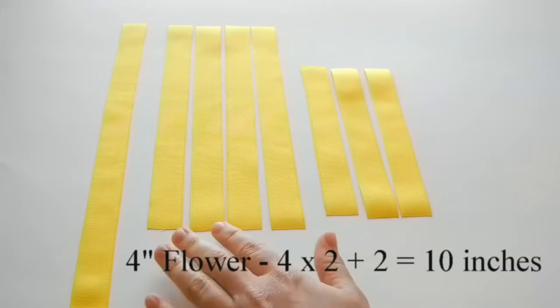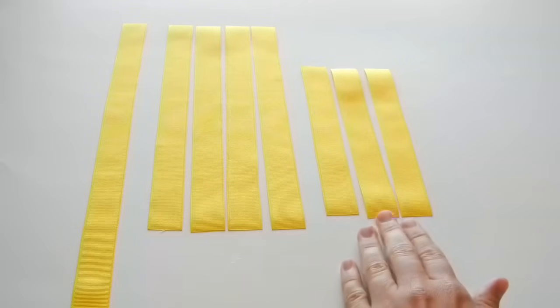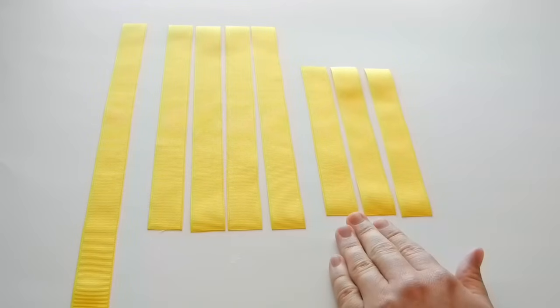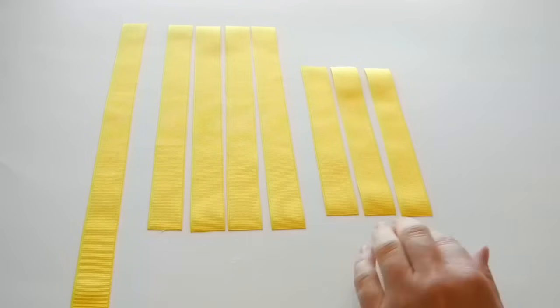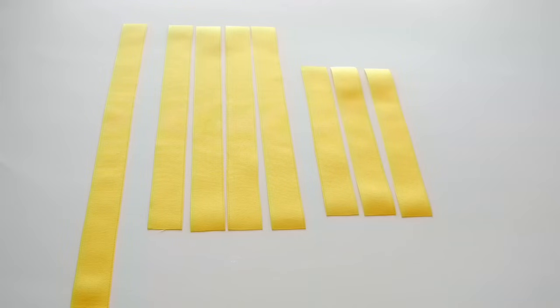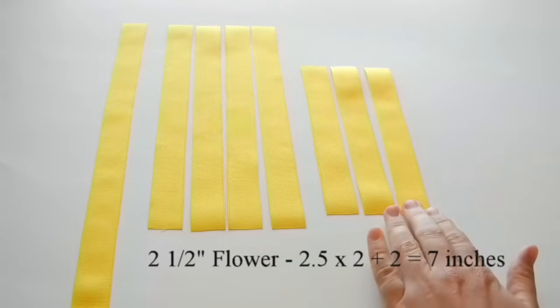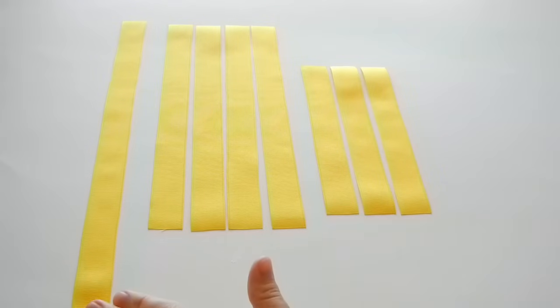Here I've got four pieces cut to ten inches. For the second layer, I wanted to have six petals, so we're doing three. For this layer I wanted it to be two and a half inches, so two and a half times two is five, plus two is seven. So I've cut three pieces to seven inches.